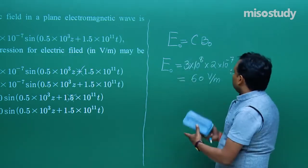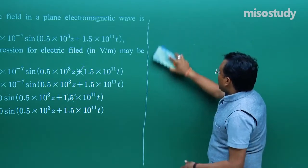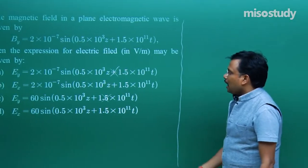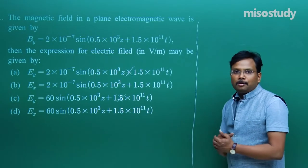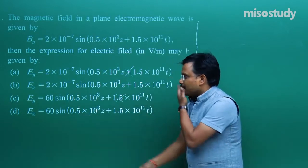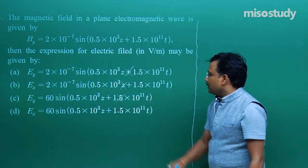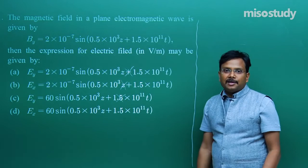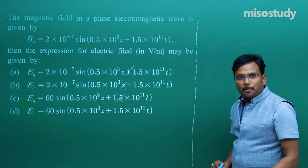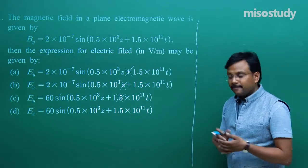So now it is crystal clear that A and C are not possible, and B is also not possible because the magnitude of the electric field is 60. So the equation itself is saying that D is the correct option. I explained the logic and the approach.